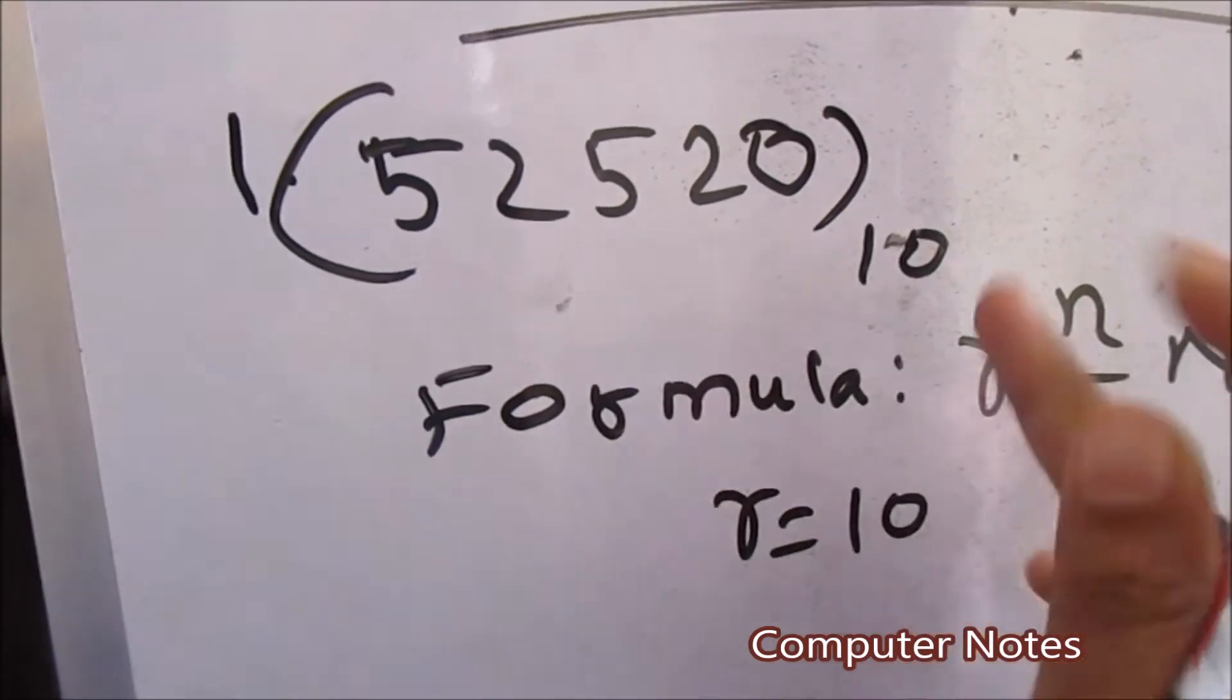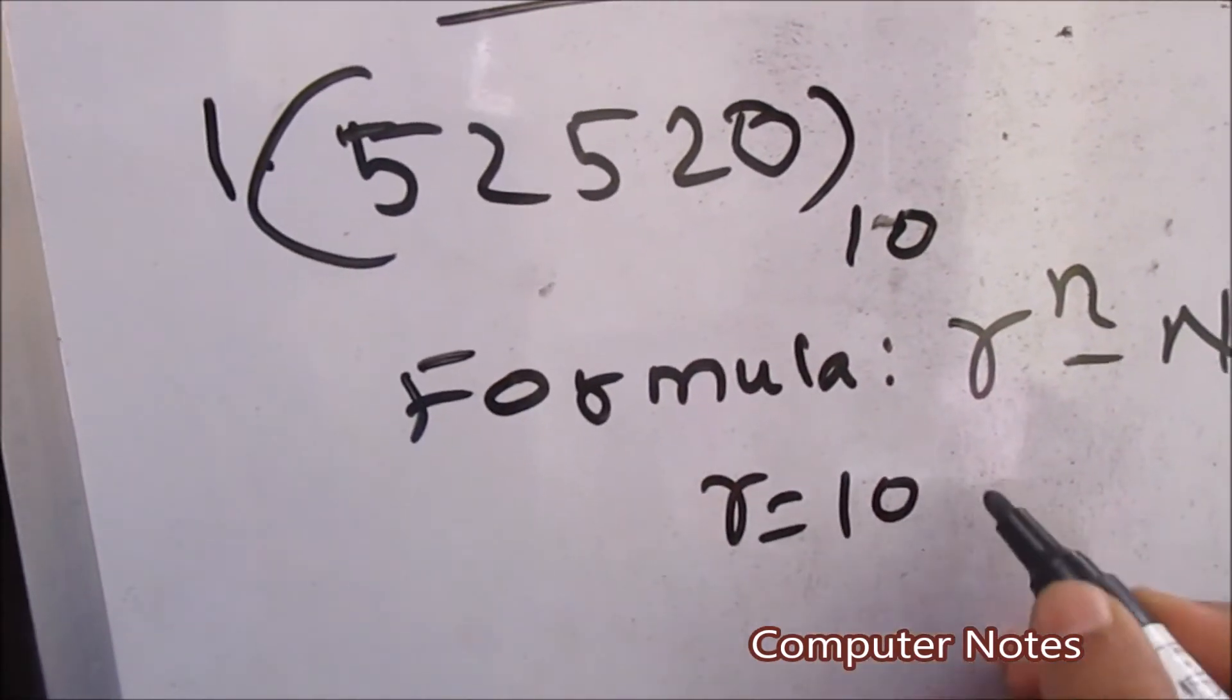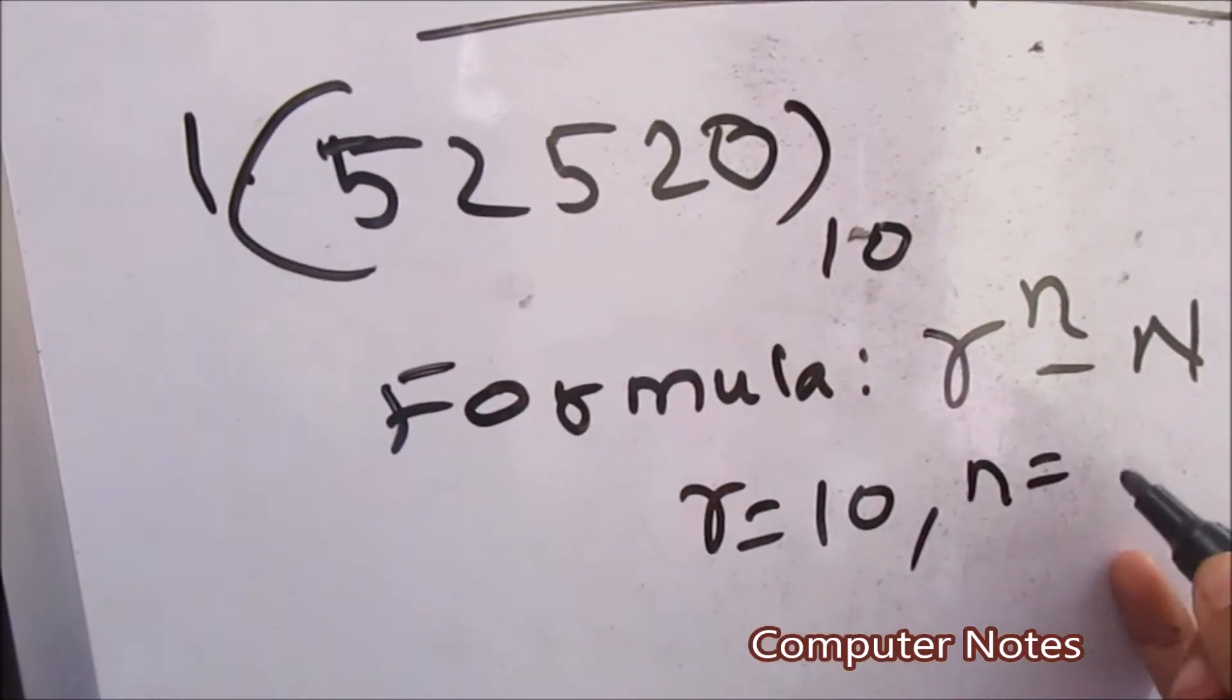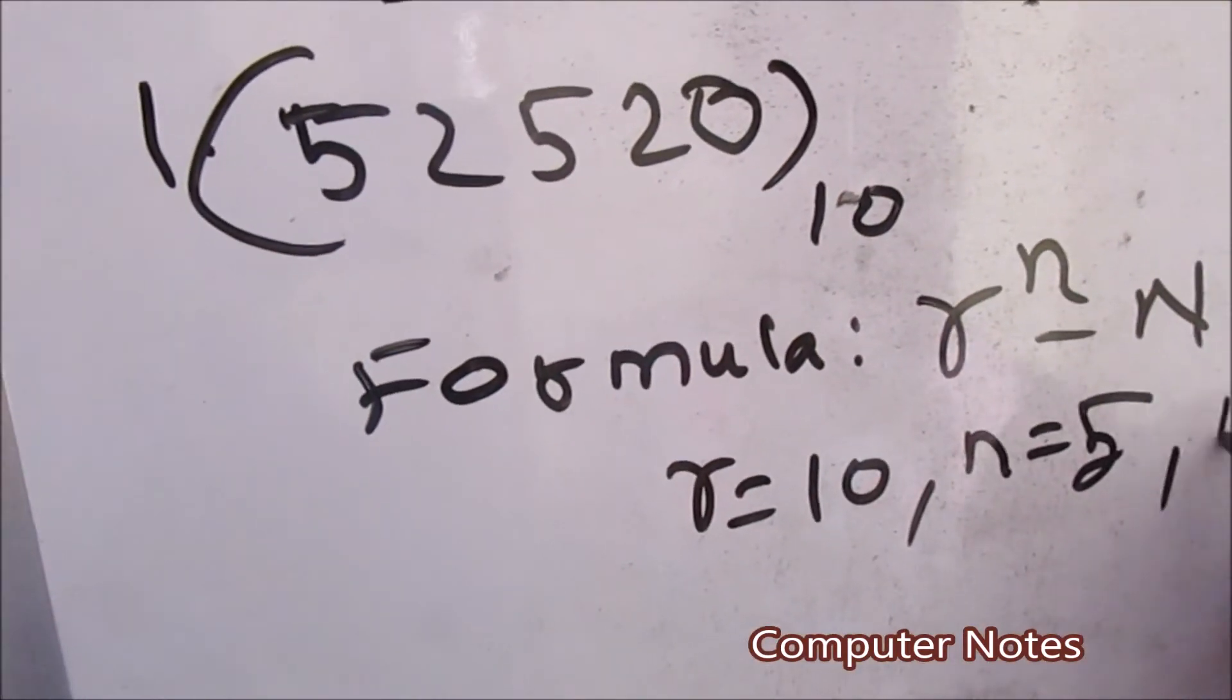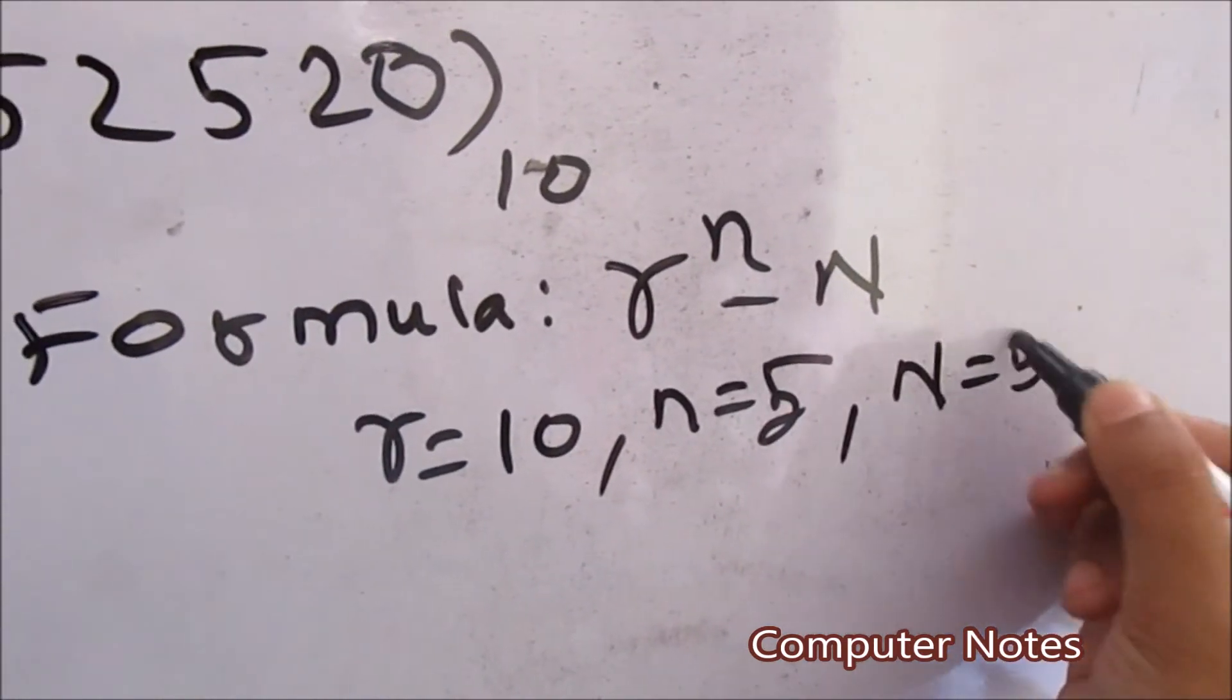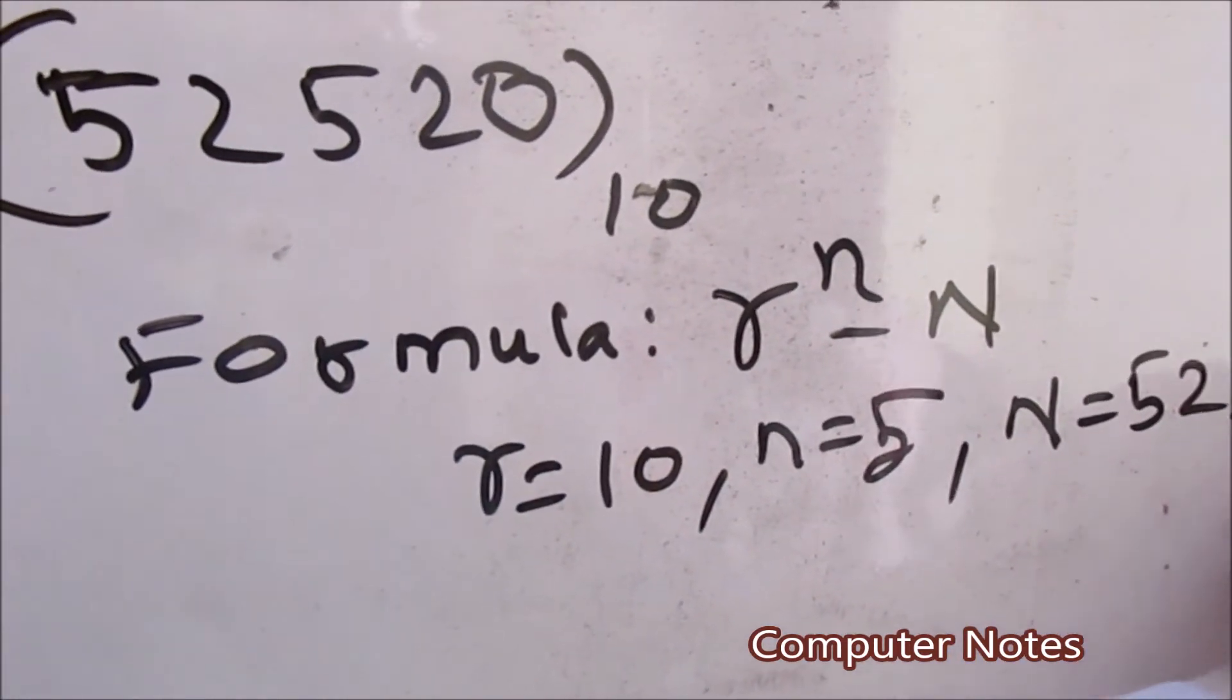So small r is base value, that is 10, and n value is 1, 2, 3, 4, 5 - five digits were given, and N is the value 52520.